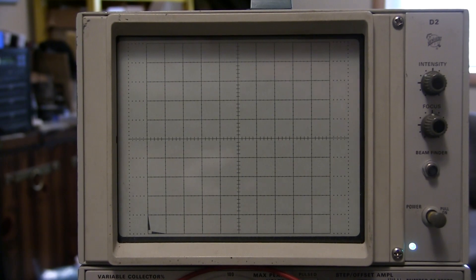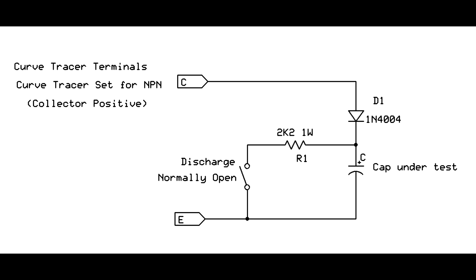By putting a diode in series with the capacitor, you get a more meaningful trace than a simple loop. The test setup in schematic form looks like this.